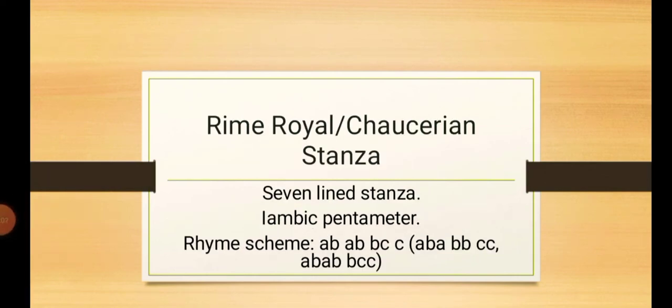Next we have Rhyme Royal or which is also called Chaucerian Stanza. Rhyme Royal, as the name suggests, was first used by King James I of Scotland. And that's why, because it was used by a royal person, Rhyme Royal name was given to it. Plus, Chaucer used it a lot, that's why Chaucerian Stanza.